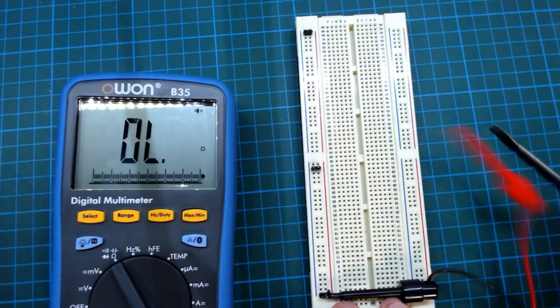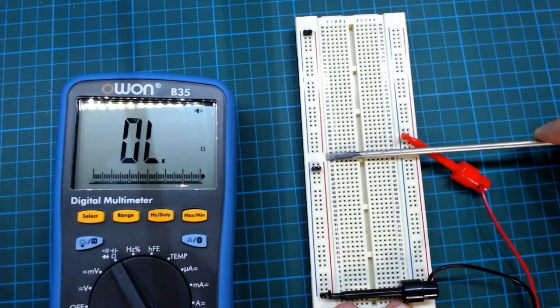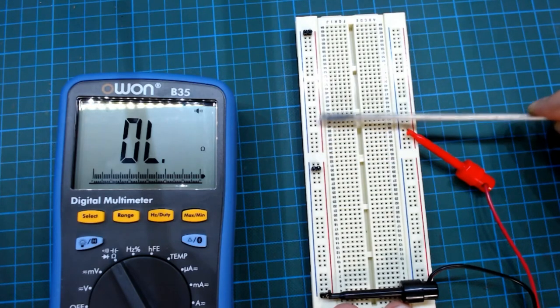And if we look at our breadboard closely we can see that the spacing here is a little bit different to the spacing elsewhere.